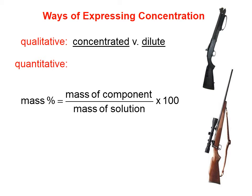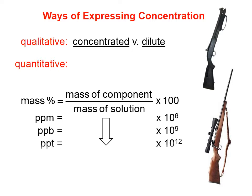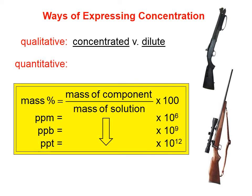We've met mass percentage in doing gravimetric analyses. That mass percentage is the same here: the mass of a given component divided by the total mass of the solution, multiplied by 100. Parts per million, parts per billion, and parts per trillion are very similar to mass percentage, except instead of multiplying by 100, you multiply by a million, a billion, or a trillion. So all of these quantitative measures are really one equation — it's just what you multiply by at the end.